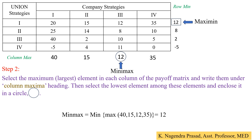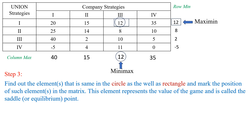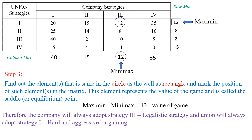We enclose the element 12 in a circle. Step 3: find the element that appears in both the circle and the rectangle. Here, the minimax value equals the maximin value, both equal to 12. This element represents the value of the game and is called the saddle point. Element 12 is enclosed with both a circle and a rectangle.